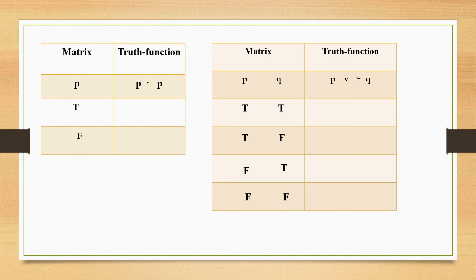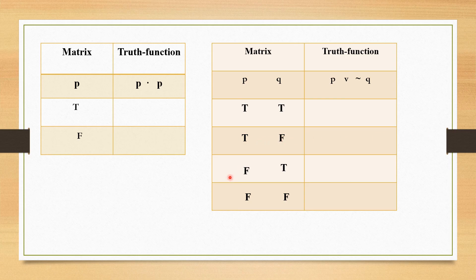Columns are vertical — meaning from top to bottom — and rows are horizontal, meaning from left to right. For one propositional variable, rows are 2 and columns are 1. The rows are 1 and 2, and the column is 1, because the number of propositional variables is 1, giving 2 raised to 1 = 2 rows.